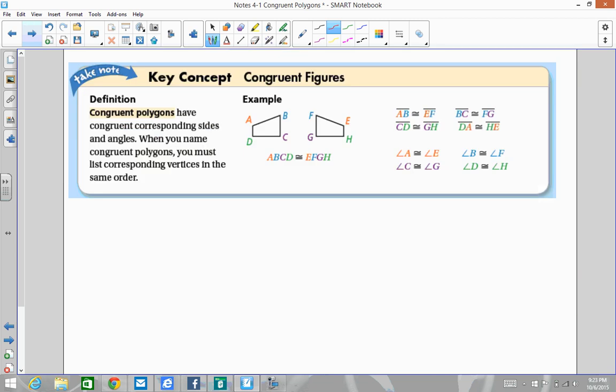Our first concept is congruent polygons. It says that congruent polygons have corresponding congruent sides and angles. When you name congruent polygons, you must list corresponding vertices in the same order.